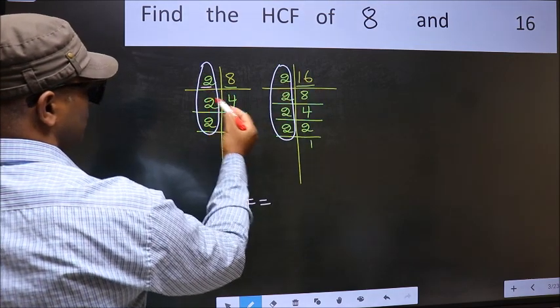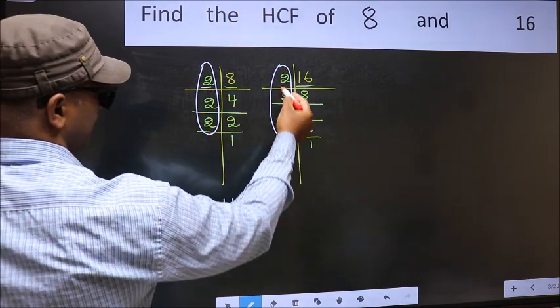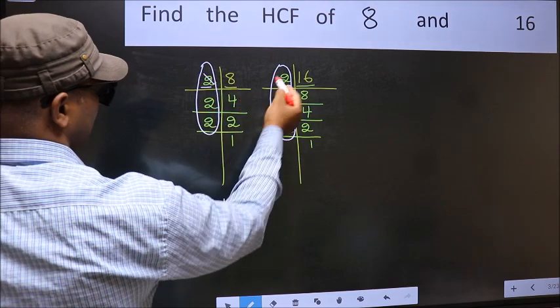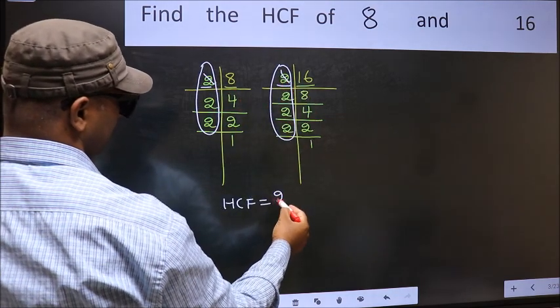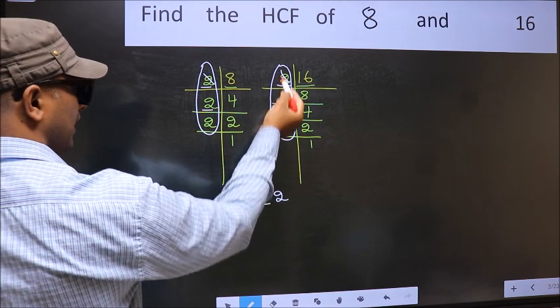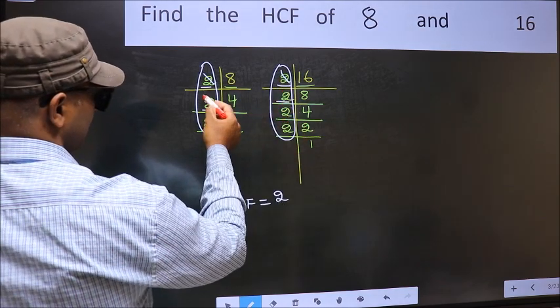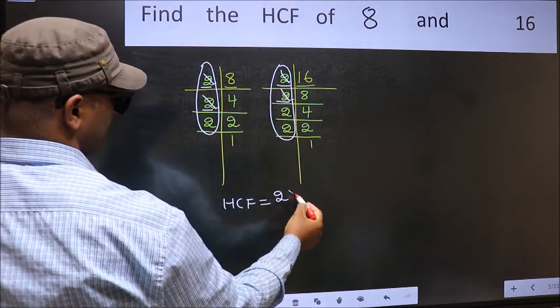Starting with the number 2. Do we have 2 here? Yes. So you cut 2 right here. Next number 2. Do we have 2 here? Yes. So you cut 2 right here.